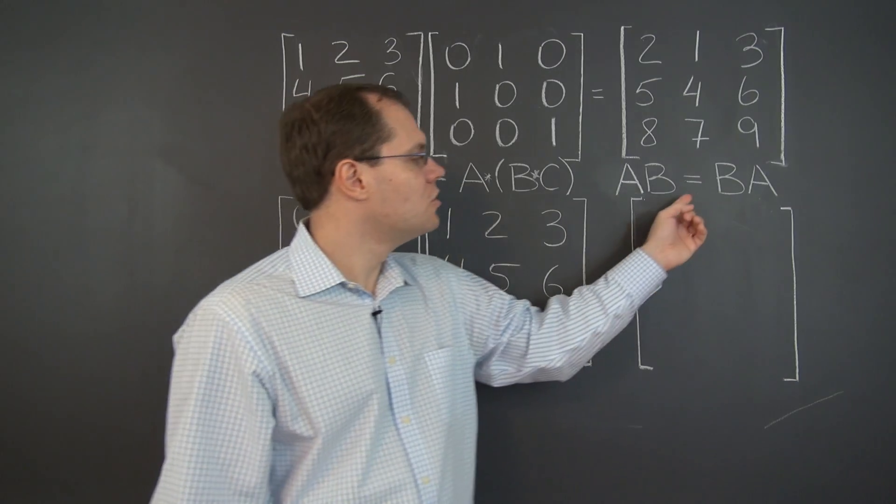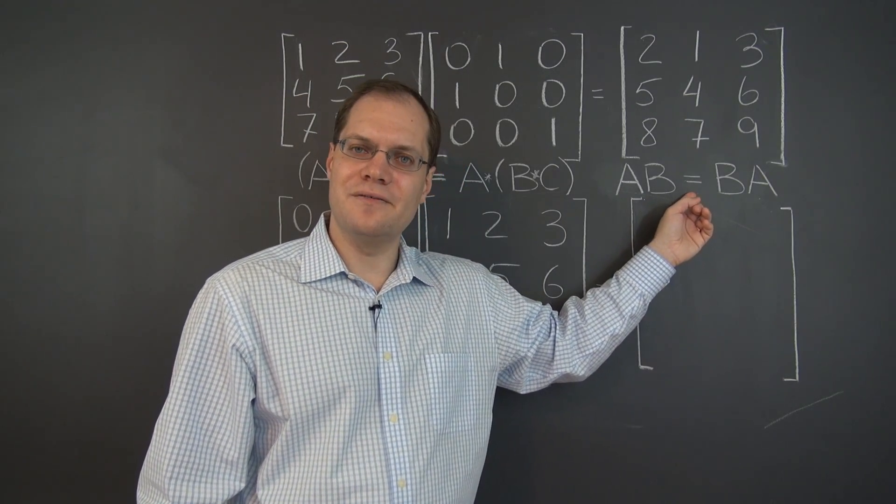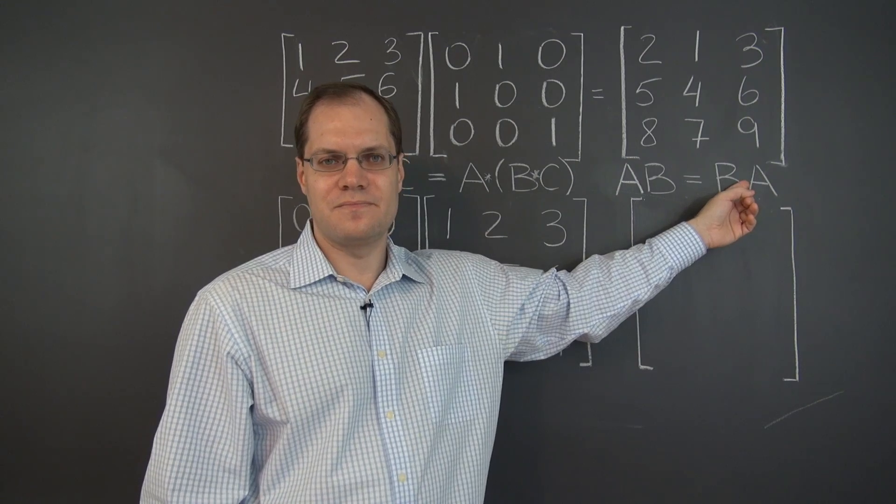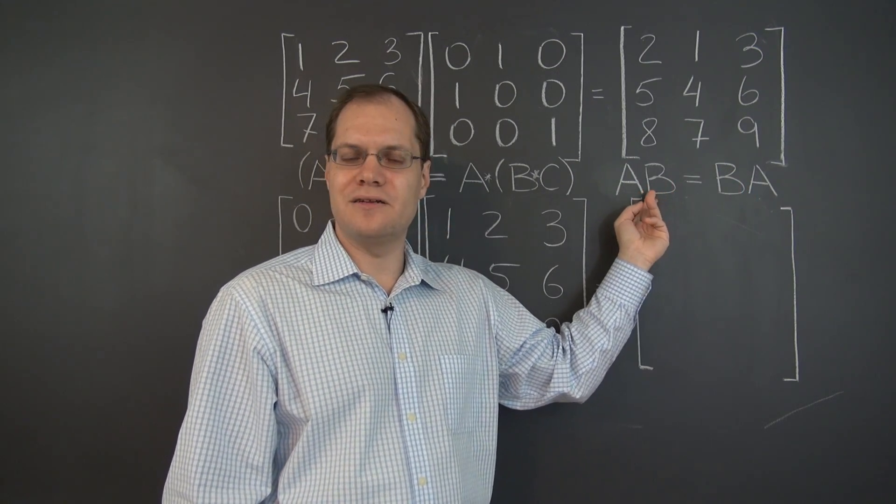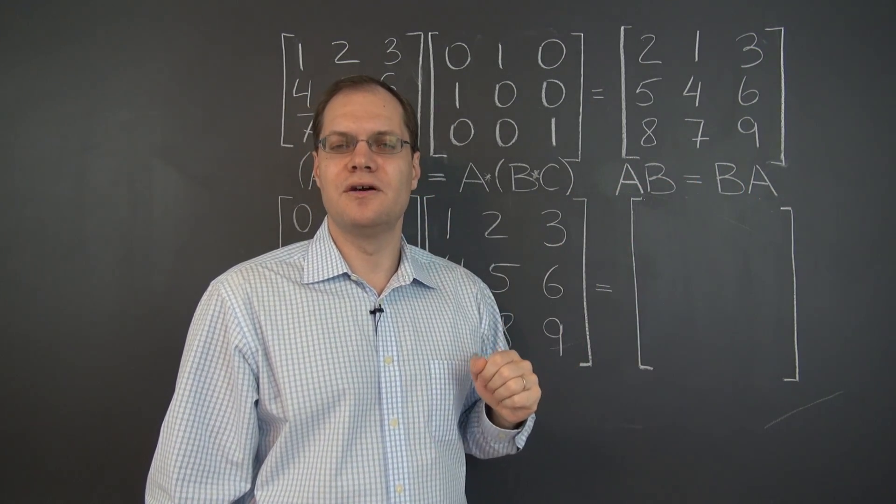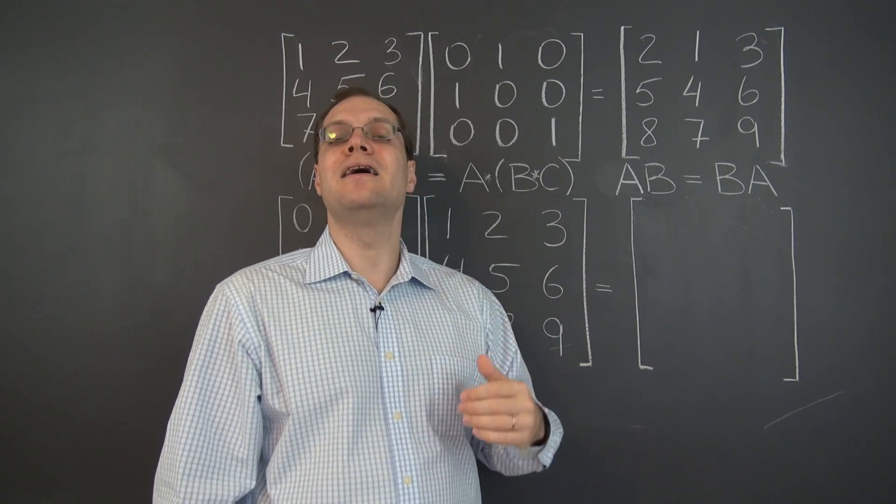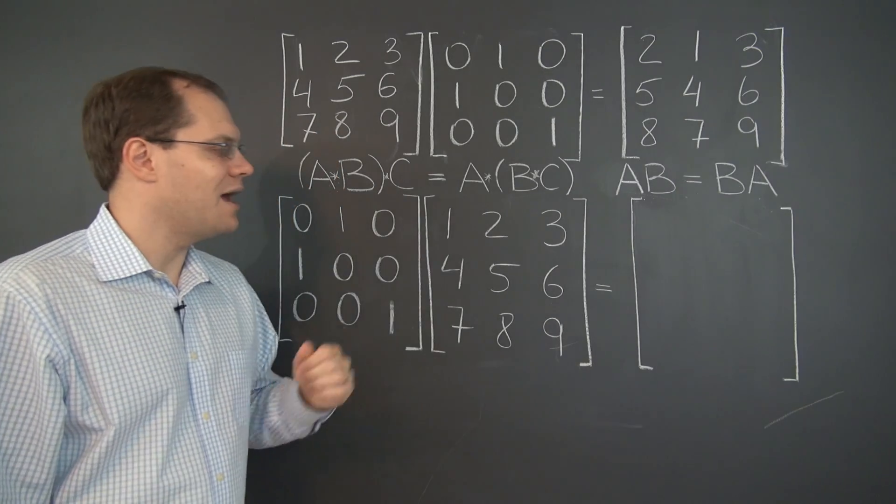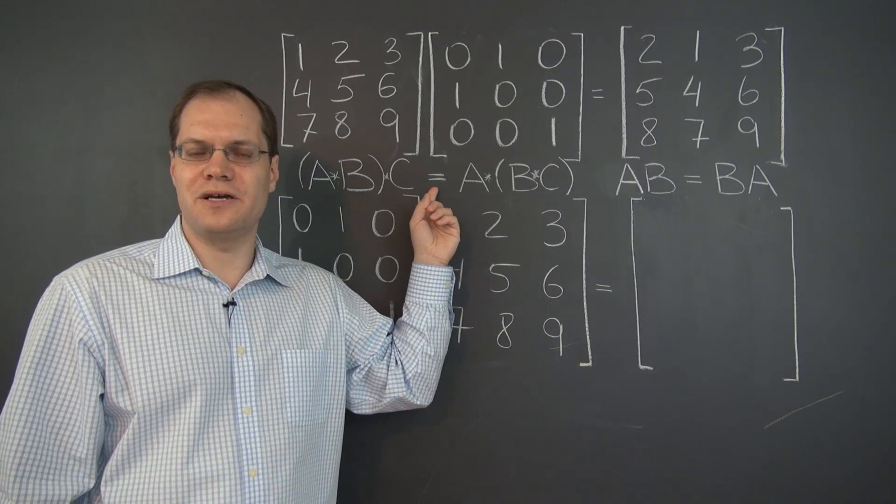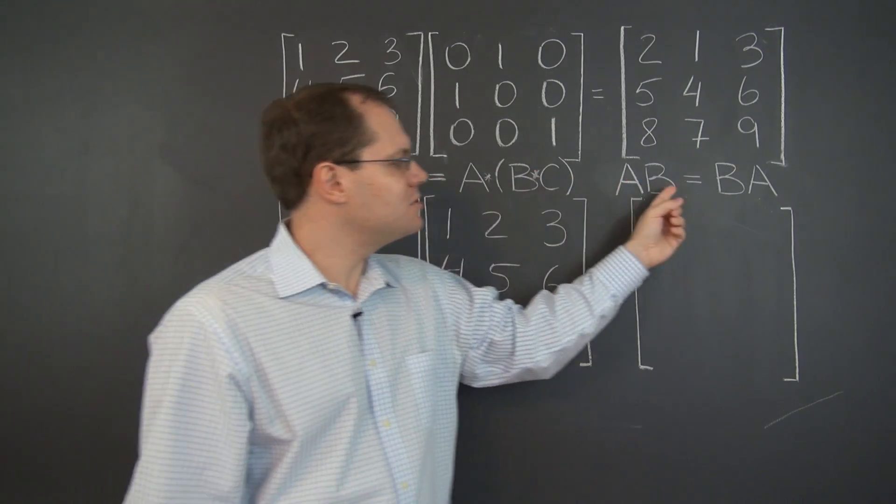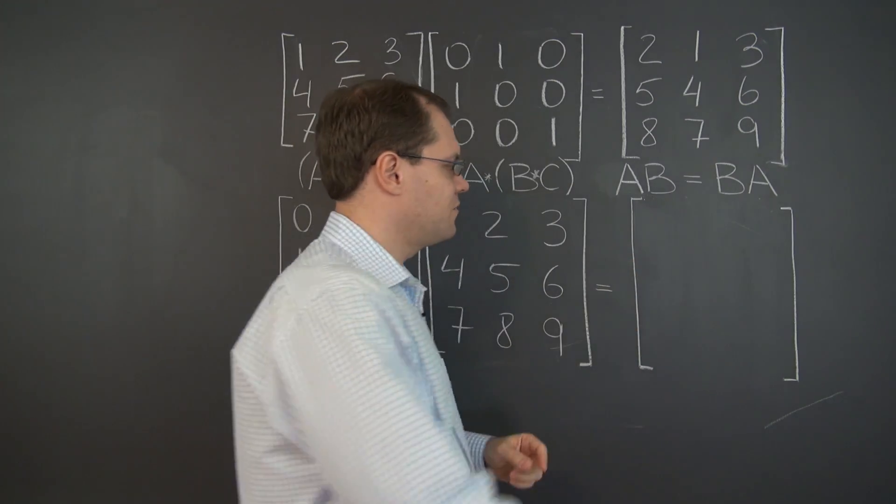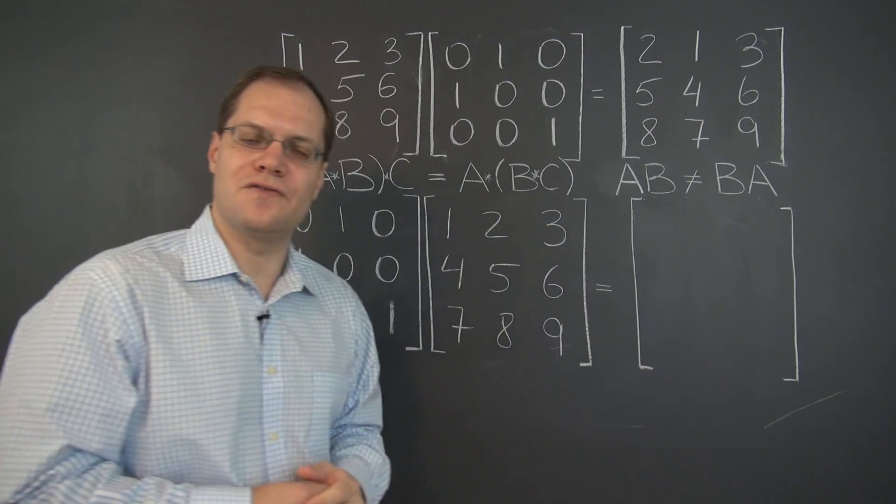Now when we come to commutativity, there's only one operation, but the order of the multiplicative terms is reversed. That's the crucial difference between commutativity and associativity. While associativity holds for matrix multiplication, commutativity fails for matrix multiplication, as we're about to discover.